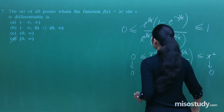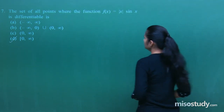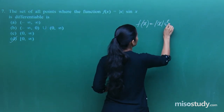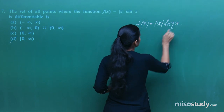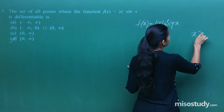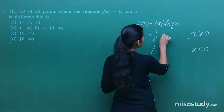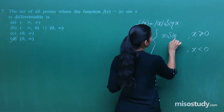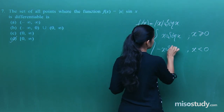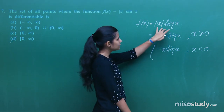Moving to the next question: the set of all points where f(x) = |x|·sinx is differentiable. f(x) equals x·sinx when x ≥ 0, and −x·sinx when x < 0. We need to evaluate the differentiability of this function.